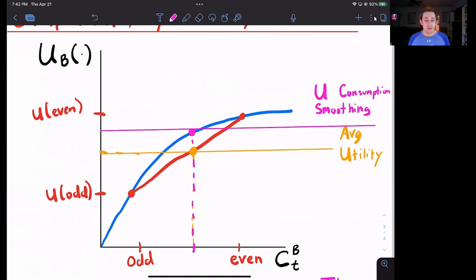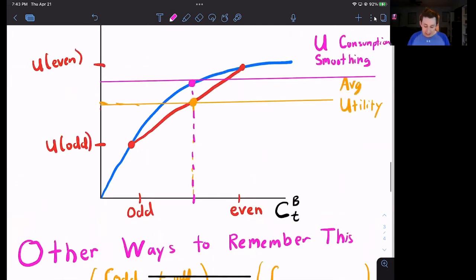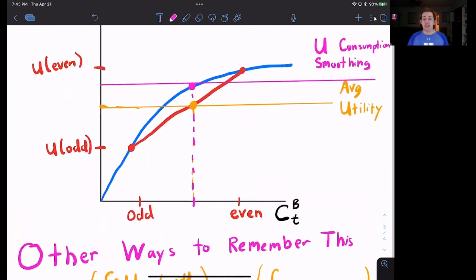Now, this graphical representation hopefully makes sense. What are some other ways that you can think of this in order to kind of keep it straight in your head? Well, one way is you could say that the expected utility of consuming an odd amount and even amount is going to be less than the utility of just the average consumption. So for Bill, if I have strictly concave utility, I want to have a nice smooth consumption because again, that line is going to be above the average of not consumption smoothing. I want the highest utility I can get. I'm going to consumption smooth.